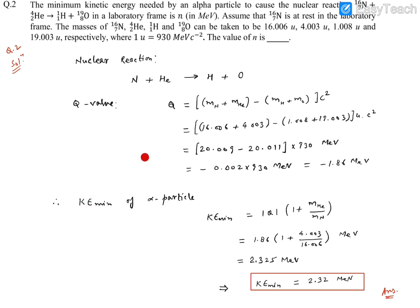Now for this reaction to take place, alpha particle must be bombarded with some minimum kinetic energy. So that minimum kinetic energy is given by this mod of Q value into 1 plus mass of alpha particle divided by mass of nitrogen.